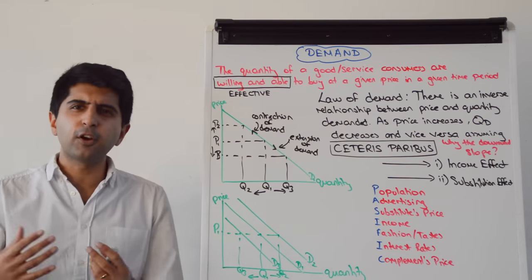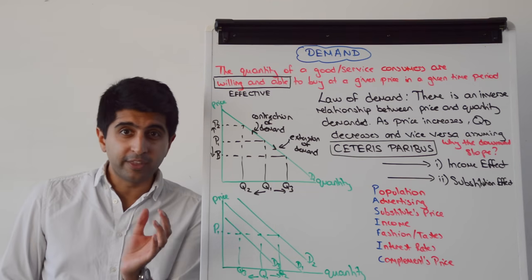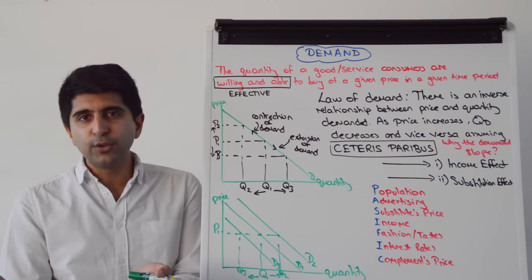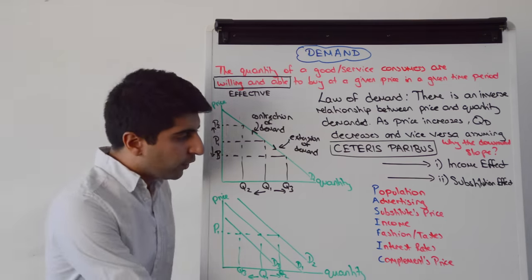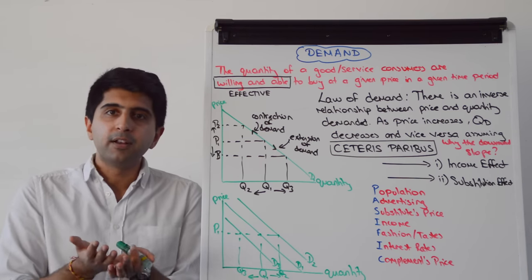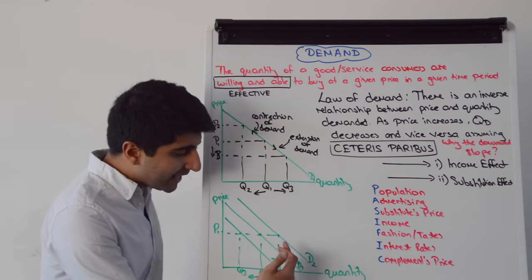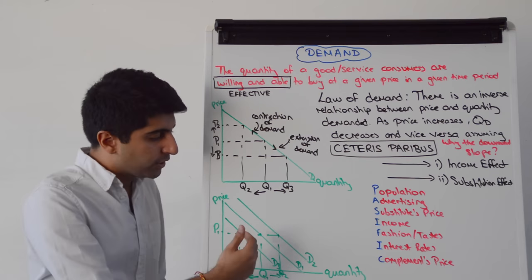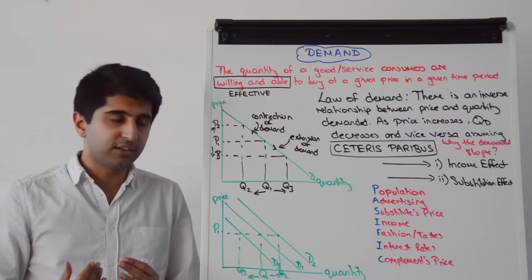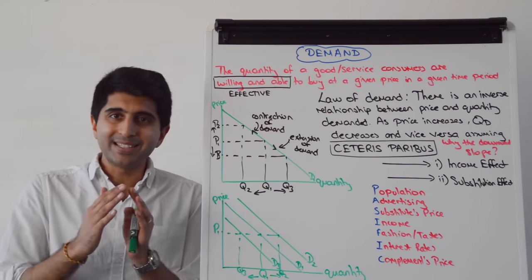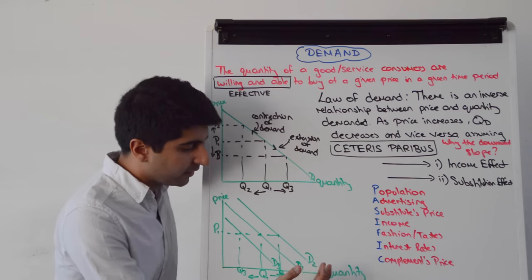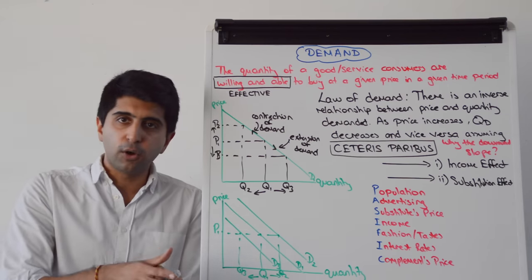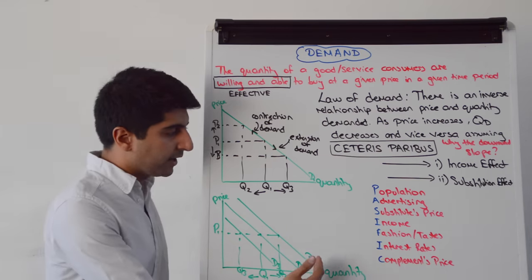We've also got the complementary good's price. A complementary good is one that's often bought alongside another — for example, printer ink is a complement to printers. If the price of printers goes up, the demand for printer ink shifts to the left. It's not the price of printer ink that changed — it's the price of printers — which causes the demand curve for printer ink to shift. If the price of printers went down, the demand for printer ink would shift to the right from D1 to D2.